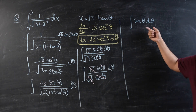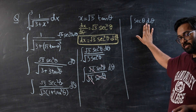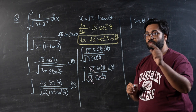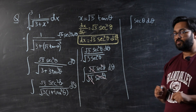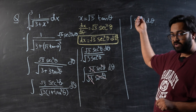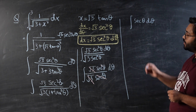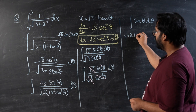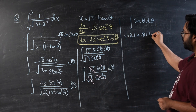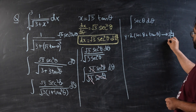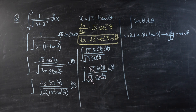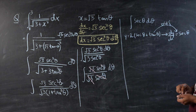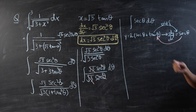Many students reach this point and get stuck because they don't know how to integrate sec θ directly — and that's because you're not supposed to know it directly. What you're supposed to do is connect this to the previous part. Recall from Part 1 that if y = ln(sec θ + tan θ), then dy/dx = sec θ. So the differentiation of ln(sec θ + tan θ) gives sec θ.